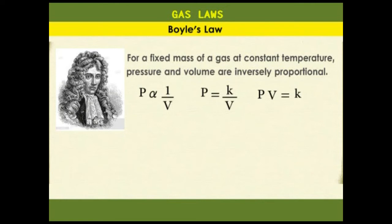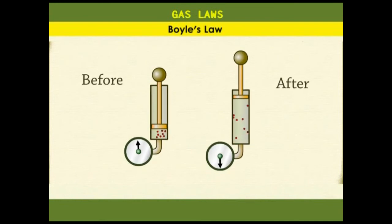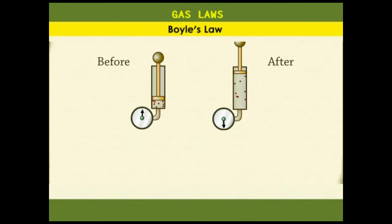Often Boyle's Law is used to compare two situations: a before and an after. In this case we can say P1V1 equals k and P2V2 equals k as well. Because both are equal to k, it means they are equal to each other, so we can have P1V1 equals P2V2. This is the mathematical expression of Boyle's Law.